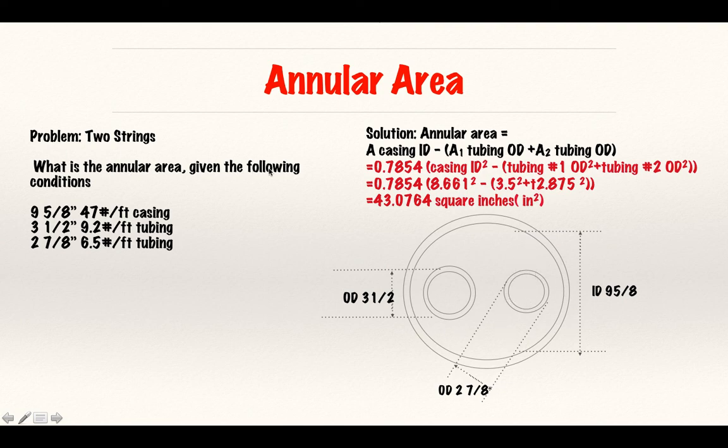What is the annular area given the following conditions: 9 5/8 inches 47 pound per foot casing, 3 1/2 inches 9.2 pound per foot tubing, and 2 7/8 inches 6.5 pound per foot tubing?